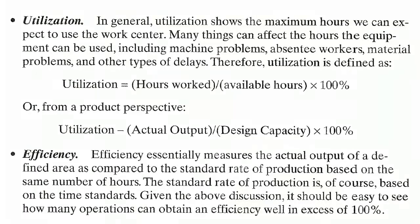Utilization in general shows the maximum hours we can expect to use the work center. Many things can affect the hours the equipment can be used, including machine problems, absent workers, material problems, and other types of delays. Therefore, utilization is defined as: utilization equals hours worked divided by available hours, multiplied by 100%.